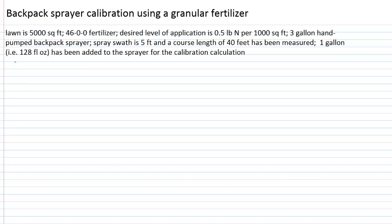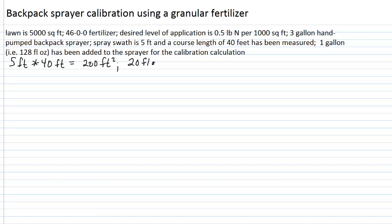Our calibration course is five feet spray swath times 40 feet in course length, which equals 200 square feet for our calibration run. We go out, run the calibration, spray it, come back, and measure how much material has been sprayed. By adding water back to the tank to bring it back to one gallon, we determine that we applied 20 fluid ounces of water during that calibration run.